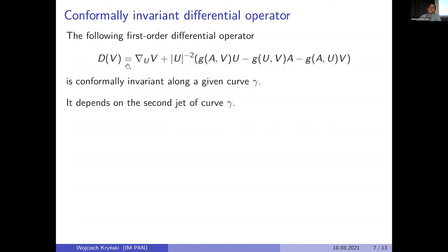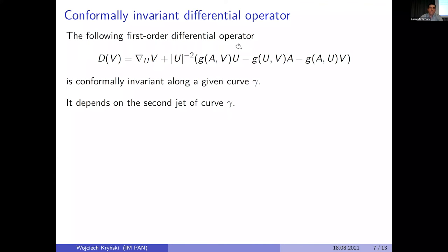We define this differential operator in the following way. It is an adjustment of the covariant derivative — U as before is the velocity of the curve, and nabla is the Levi-Civita connection for our choice of metric G in the conformal class. If we add a certain zero-order term, this becomes a well-defined conformally invariant first-order differential operator. Since the acceleration A of the curve appears here, this differential operator depends on the second jet of the curve.